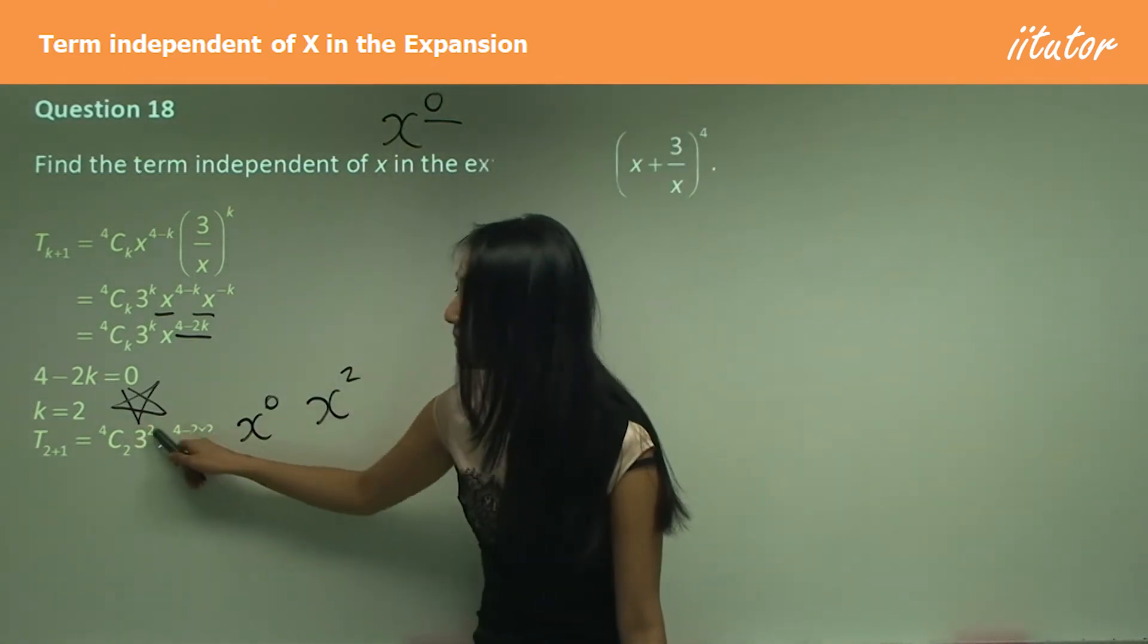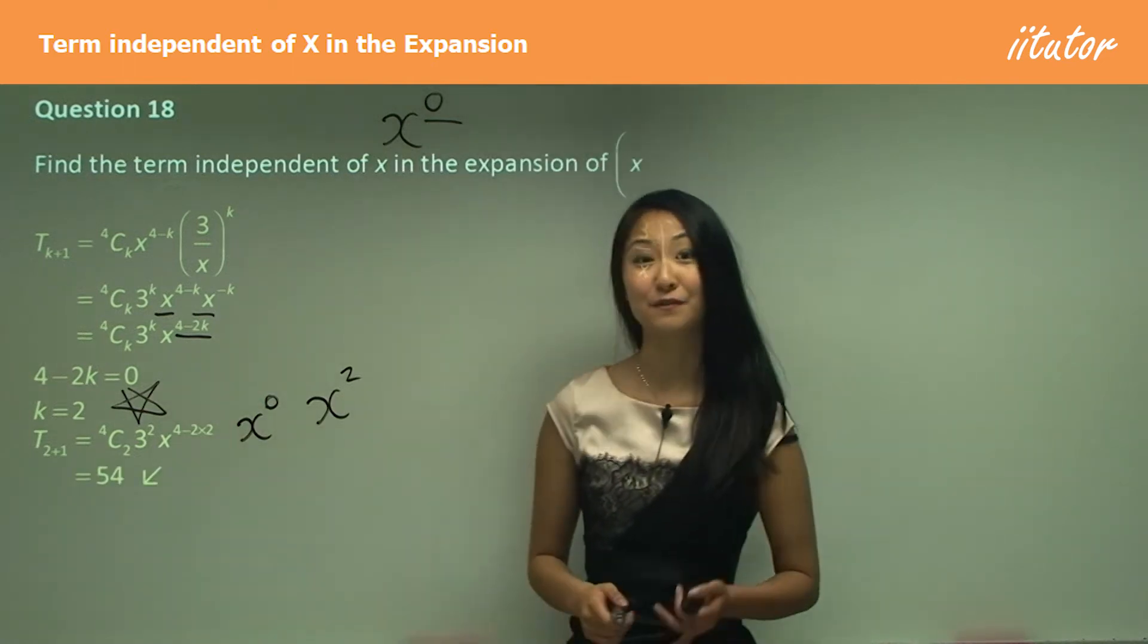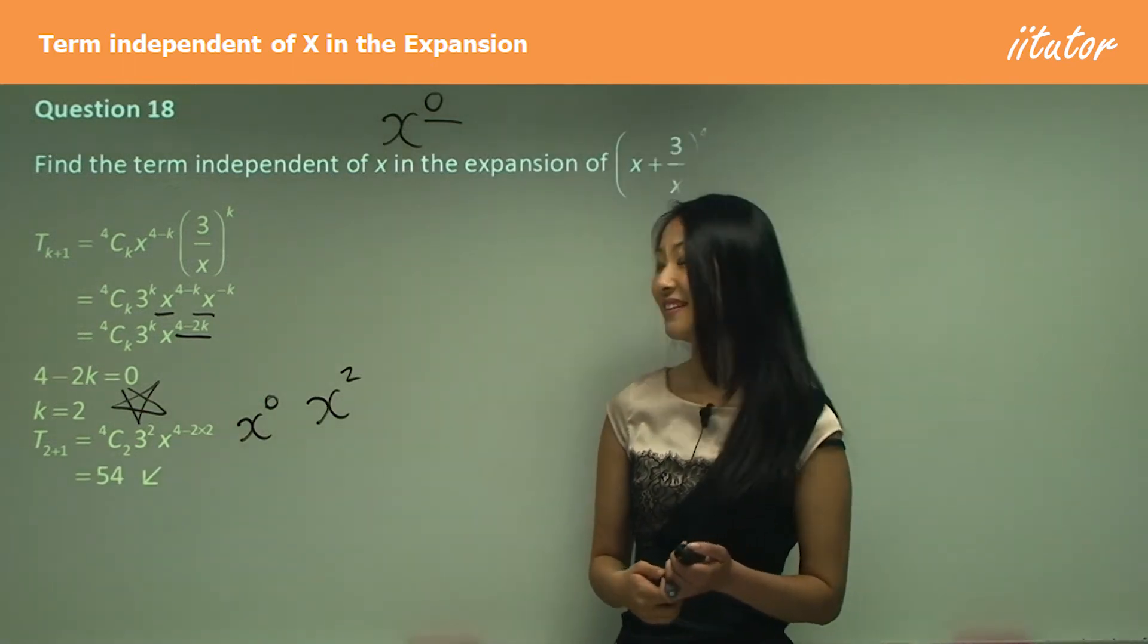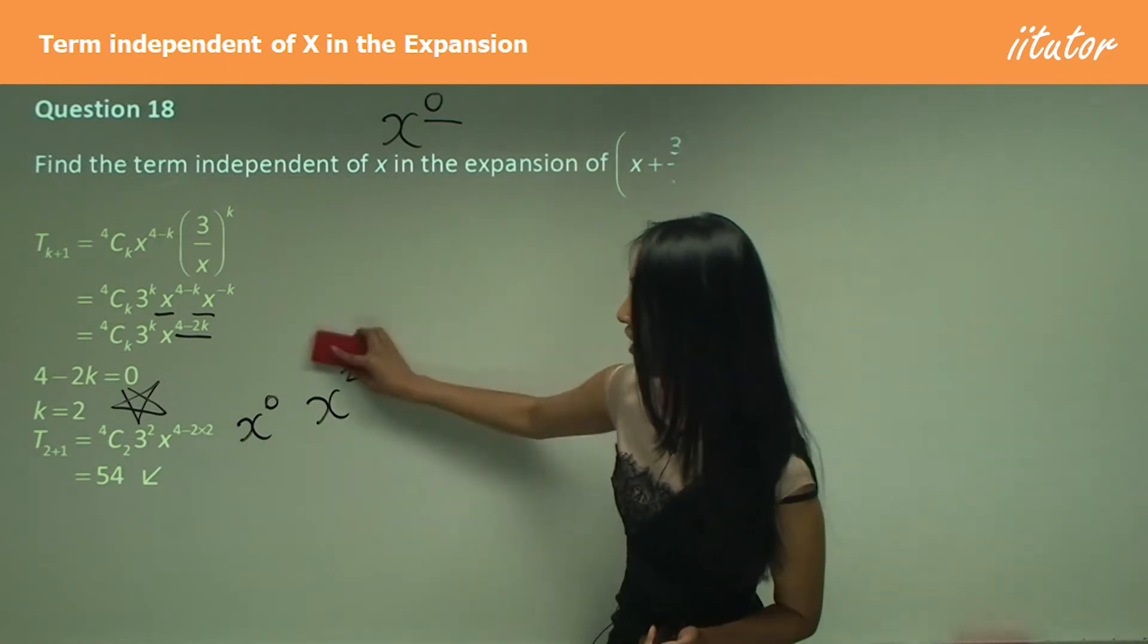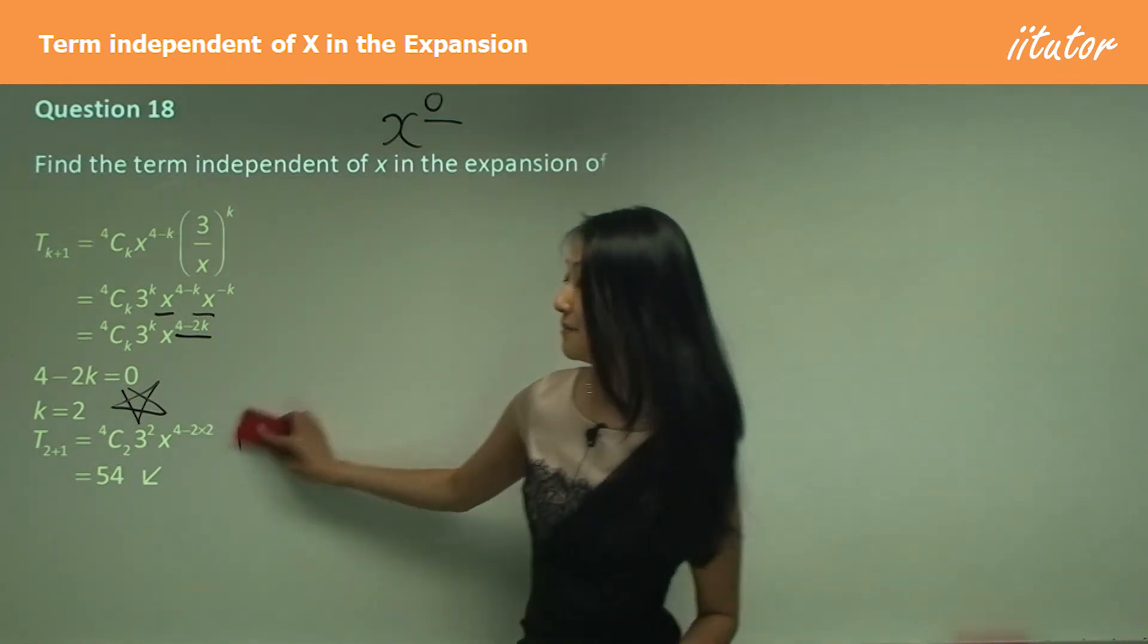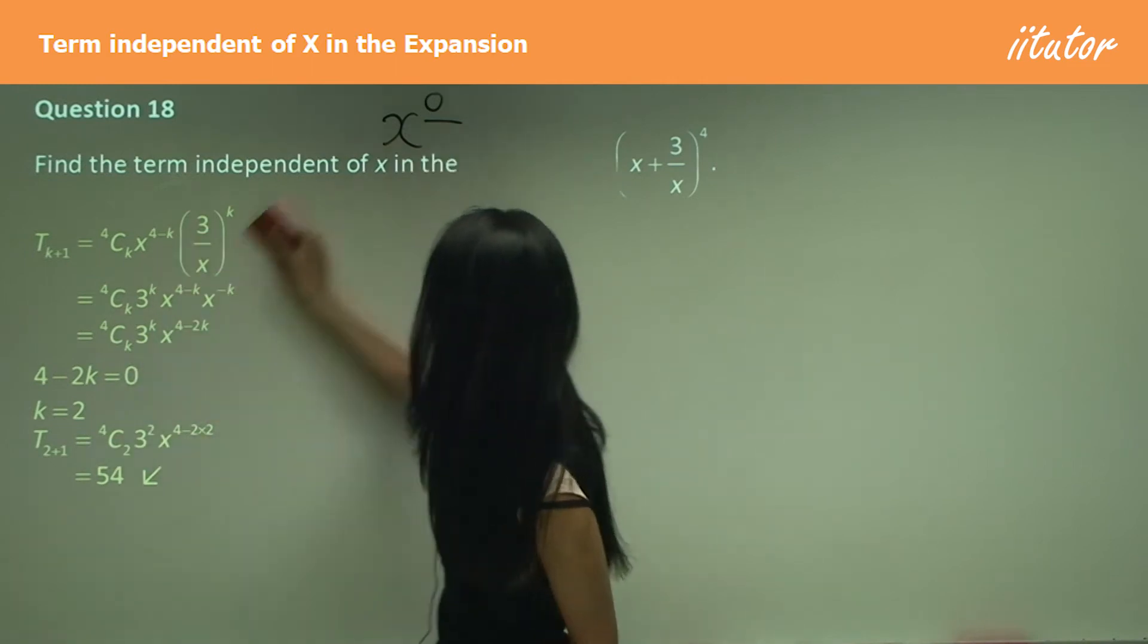Put that into your calculator and you should get 54 as your answer. So 54 is the term that is constant, or independent of x, in this expansion.